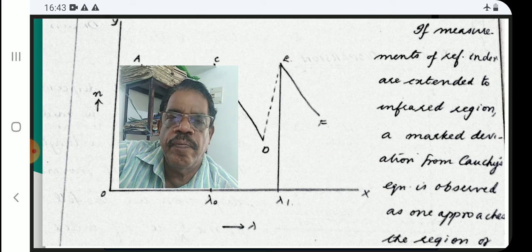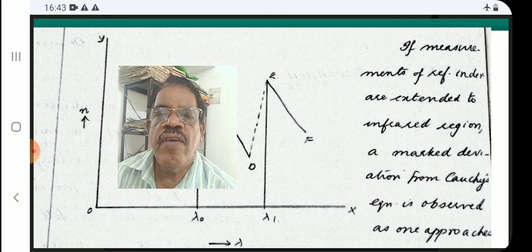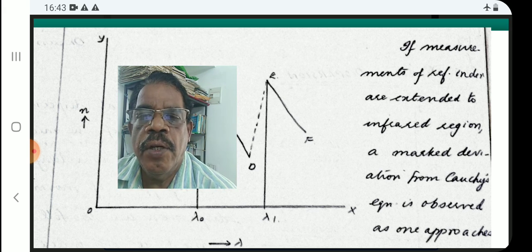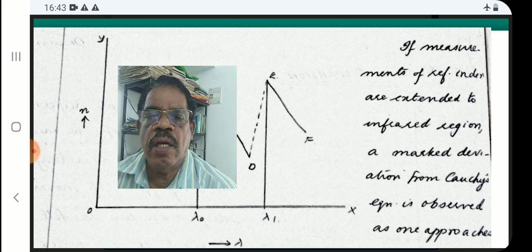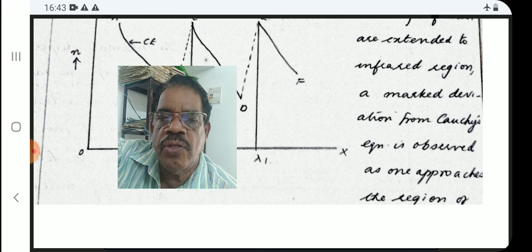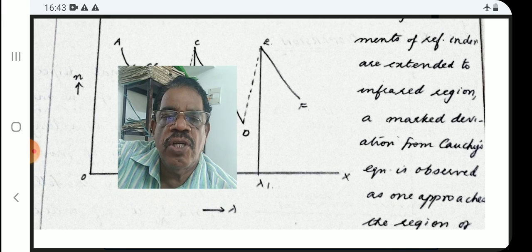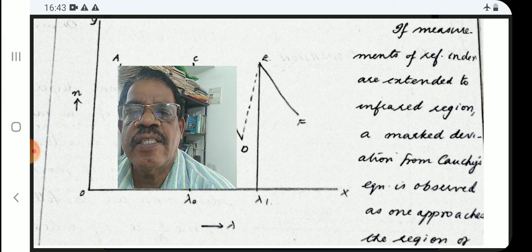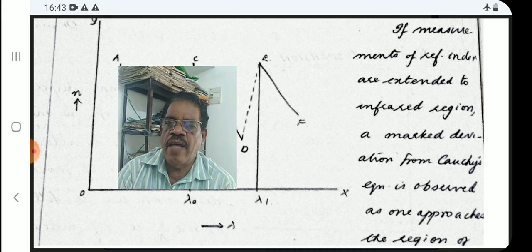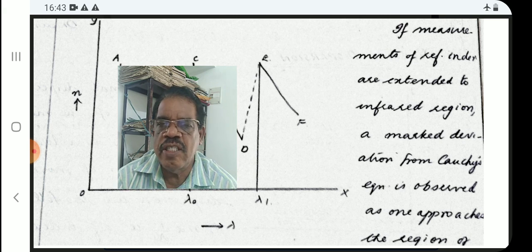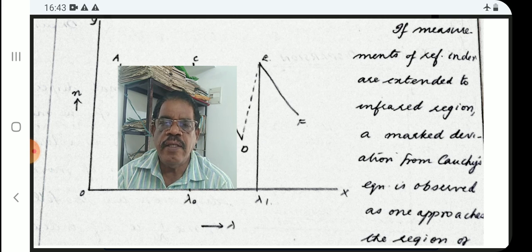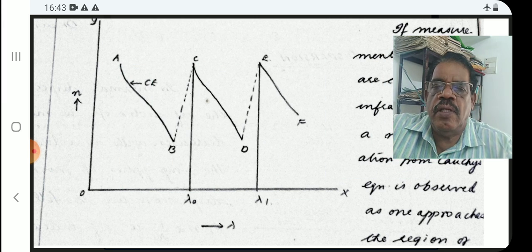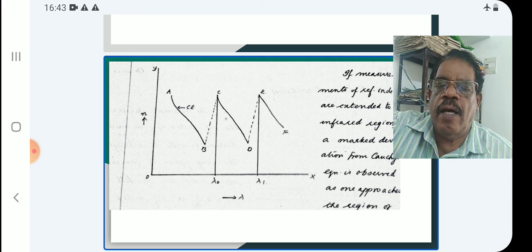If measurement of refractive index is extended to the infrared region, a marked deviation from normal dispersion occurs as it approaches the region of the absorption band. In the infrared extended region, that is the absorption band region.